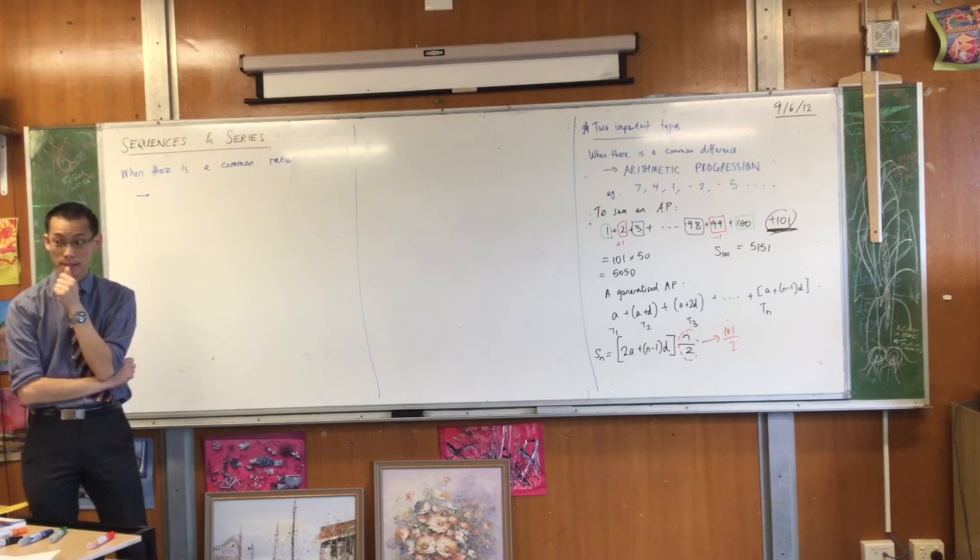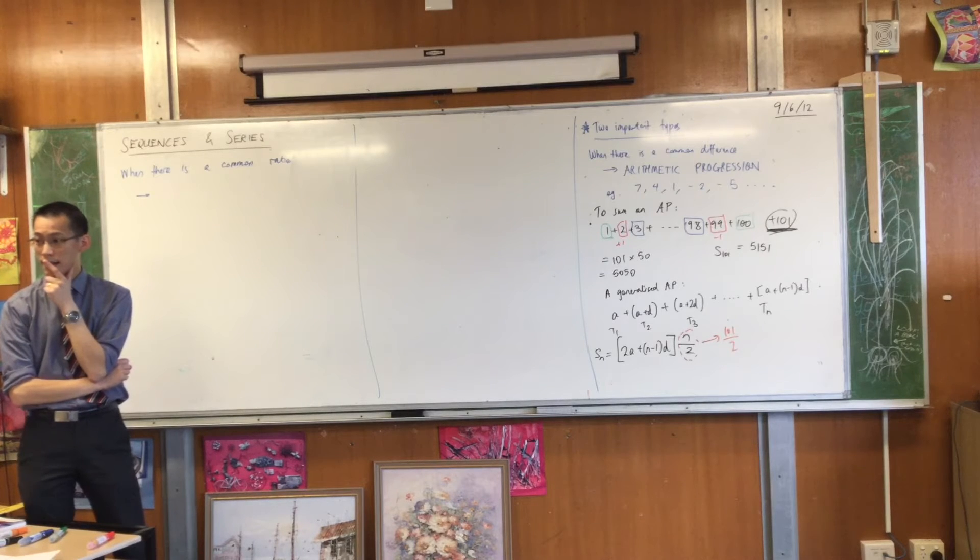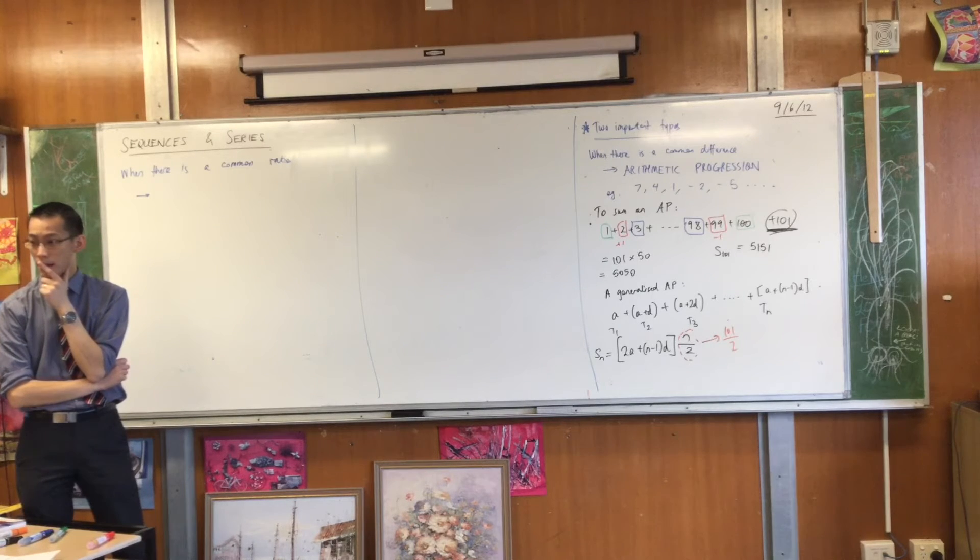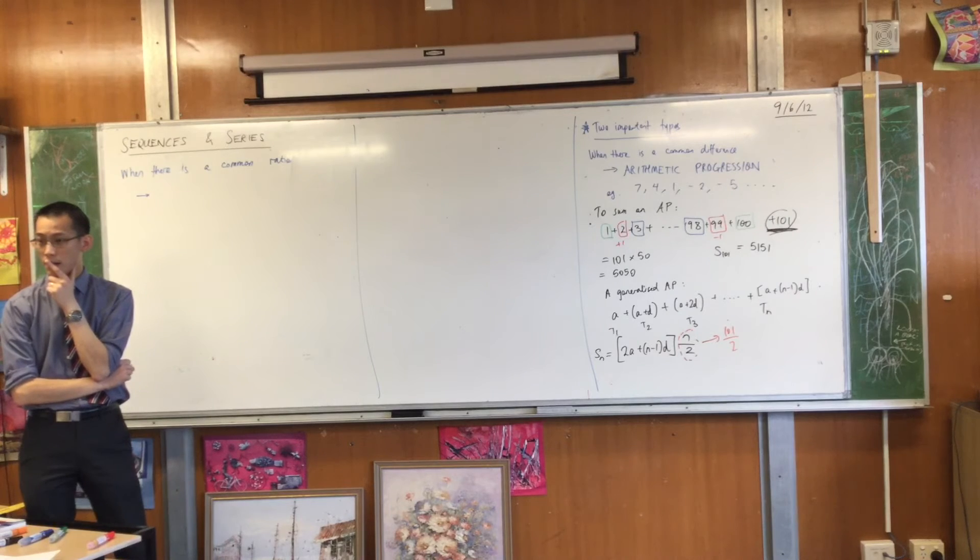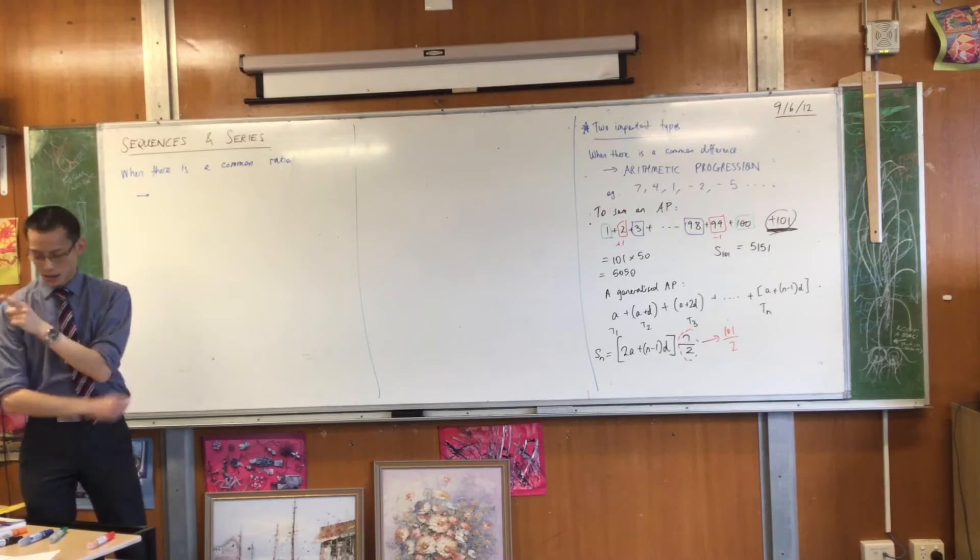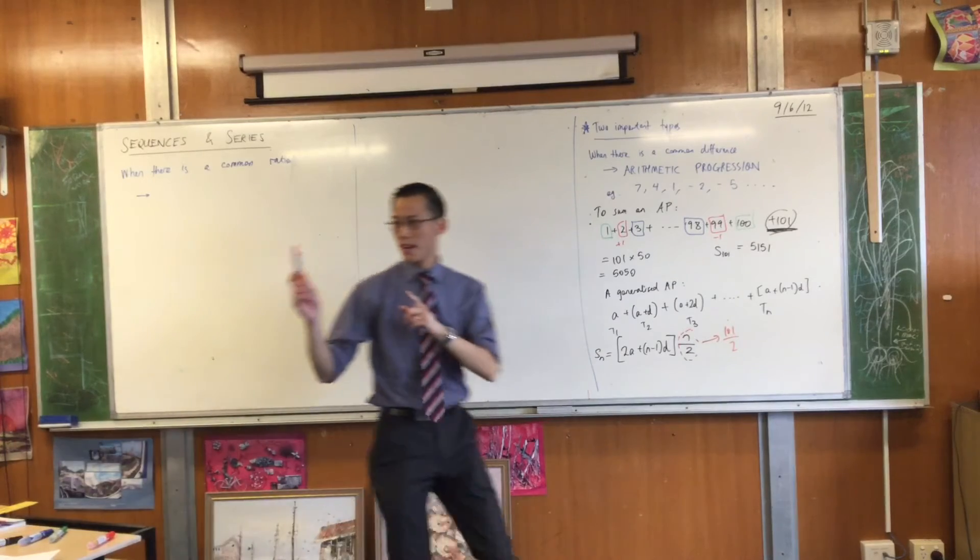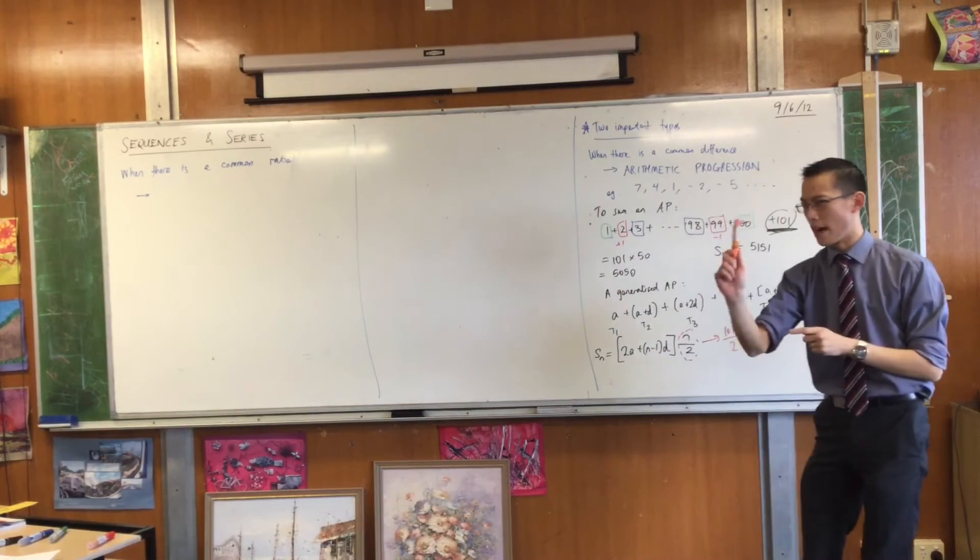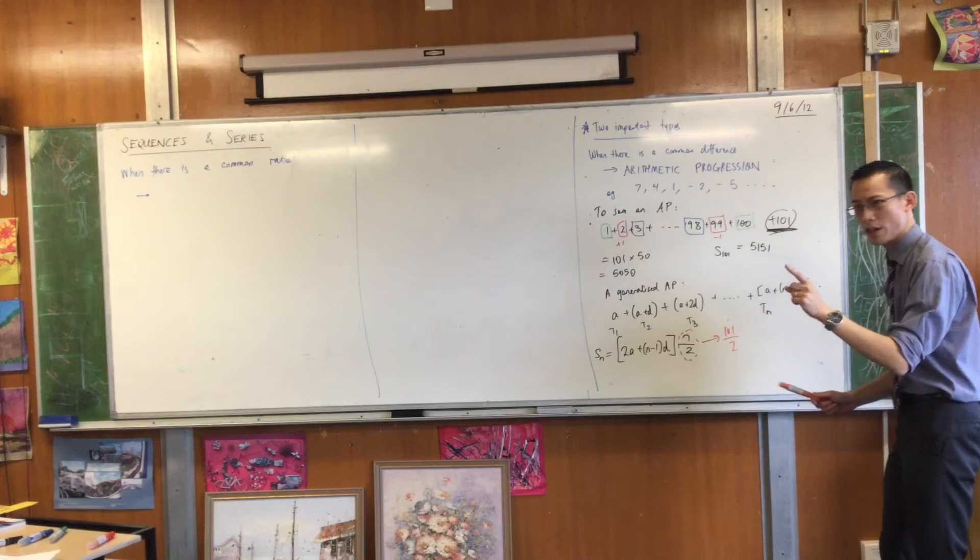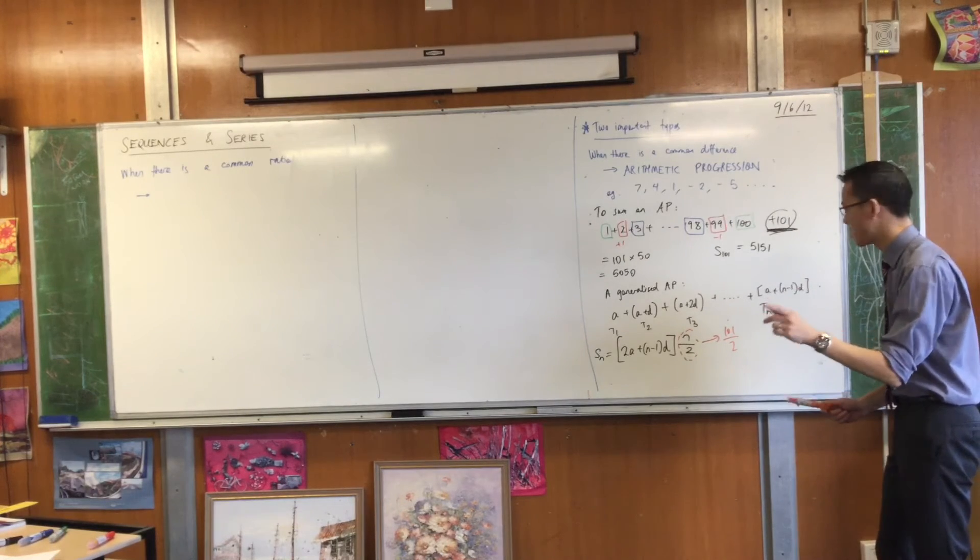Because when you divide 102 by 2, the denominator of 101 over 2, then you get an even number in the end, so you just multiply it by 101. Okay, hold on a second. I think I get your logic, but I'm not sure where you got that 102 from. Where's the 102?